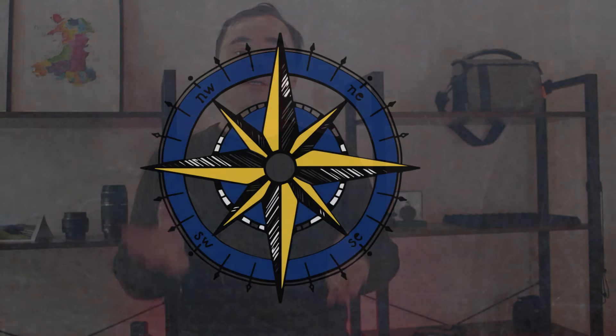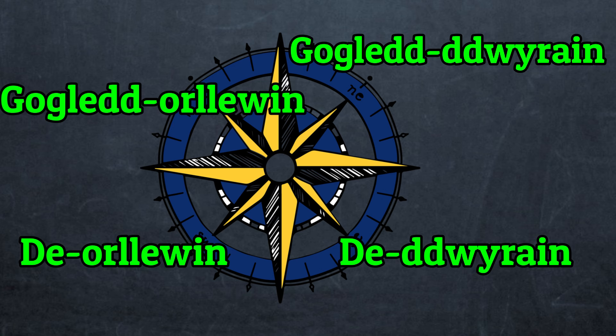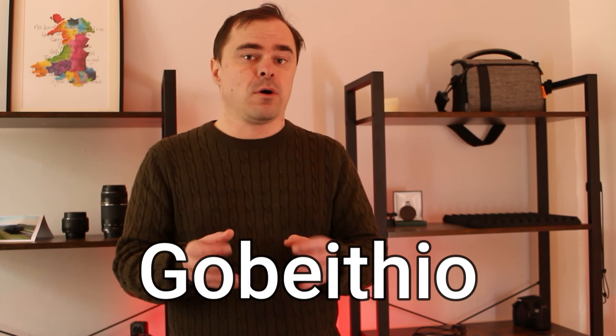In English you have northwest, southwest, southeast, northeast, and so on. In Welsh, combining directions causes a mutation to the beginning of the second word. De Orllewin — southwest, the G drops off. Gogledd Dwyrain — northeast — you see that mutation there? Gobeithio — I hope that was informative for those of you learning Welsh or those just curious about the language. Thanks for watching. Cheers to my Patreons.